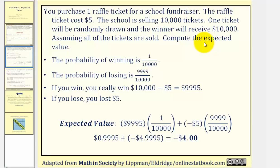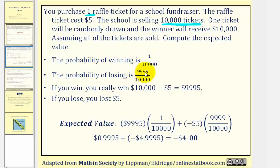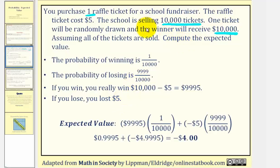The expected value would be the expected outcome if you played this lottery over and over again. There are 10,000 tickets and you only purchase one. Therefore the probability of winning is 1/10,000, which means the probability of losing would be one minus the probability of winning, or 9,999/10,000. Next, if you win, you don't really win $10,000. You actually have to subtract the cost of the ticket, so if you win, you actually win $9,995. And of course if you lose, then you lose your $5 from purchasing the ticket. This is the information we need to find the expected value for this event.